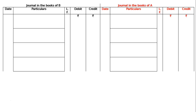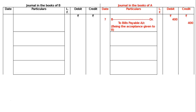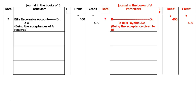A gave his acceptance to B. In A's books, Bills Payable account is debited — being the acceptance given to B — Rs.400 in the debit and credit columns. In the books of B, Bills Receivable account is debited to A, being the acceptance of A received: Rs.400 in the debit and Rs.400 in the credit column.